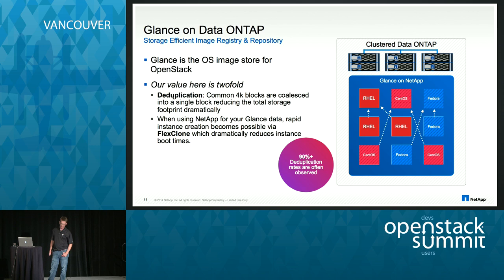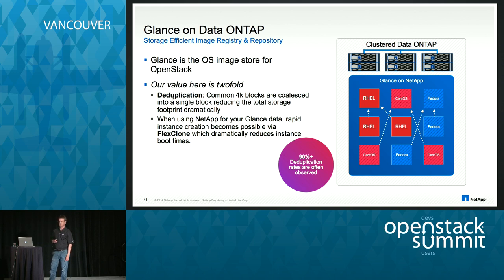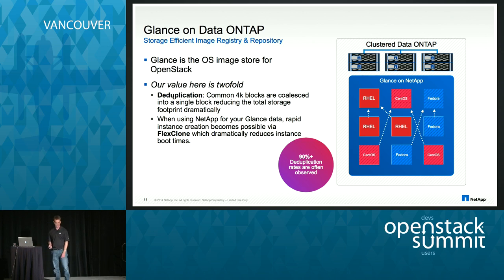The other big win with NetApp and OpenStack is FlexClone. At many summits there's a big focus on operators wanting to reduce time to boot. One way to do that is to eliminate the copying that has to happen from Glance over to Cinder. The first time you pull from Glance, we'll cache that image file in the flex volume hosting your Cinder volumes. Thereafter, all remaining copies from that Glance image are a FlexClone and take milliseconds — so you can reduce all the pull time from Glance and boot your VM basically immediately.